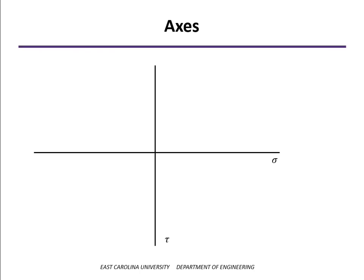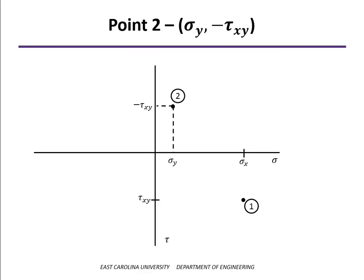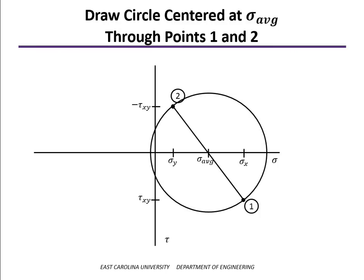To create the Mohr circle we plot two points. The first point is our value of sigma x on the sigma axis and our shear stress on the tau axis — that's point one. The second point will be sigma y and minus tau xy. Once we've got these two points plotted, we connect them with a straight line. Where they intersect the sigma axis, that'll be our average normal stress, sigma average. The Mohr circle is then centered at sigma average and passes through points one and two.